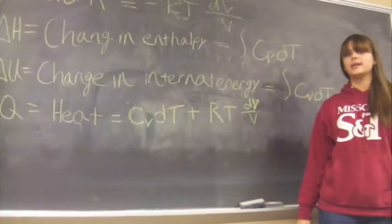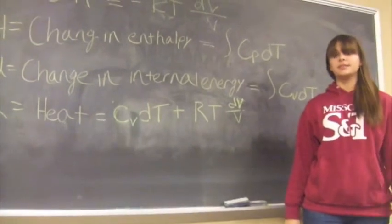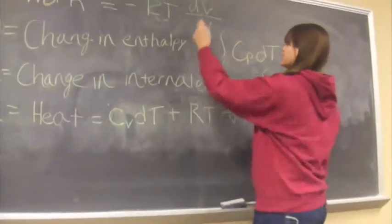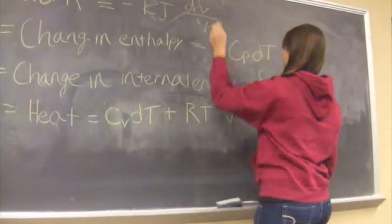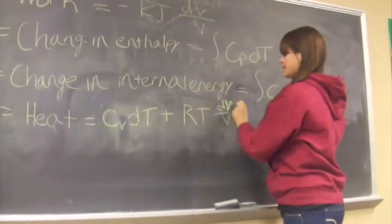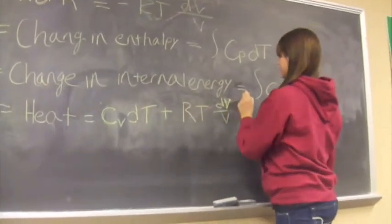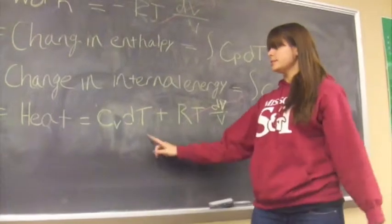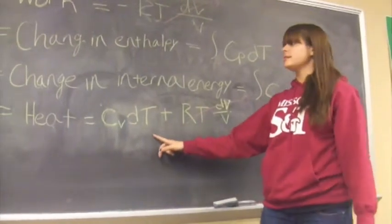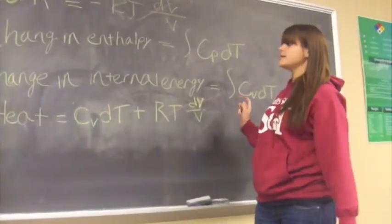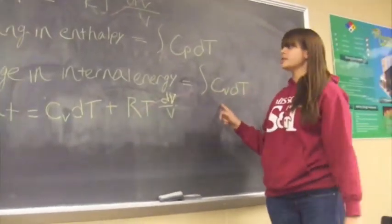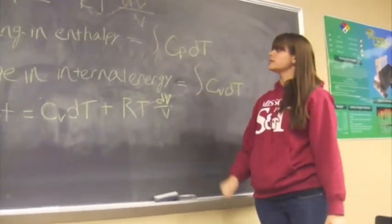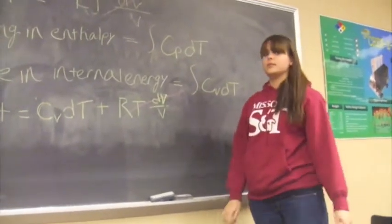For an isochoric process, it means that the volume is constant. So then, for each of these terms, this one's going to go to zero, and then this part goes to zero. And then we're left with heat just equals CᵥdT, which is the same as internal energy. And then the change in enthalpy is just the integral of the CᵥdT.